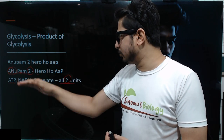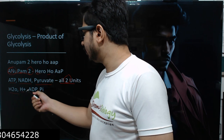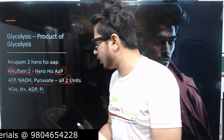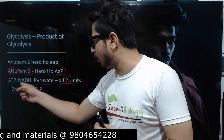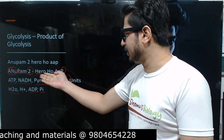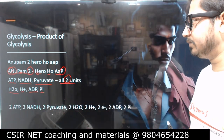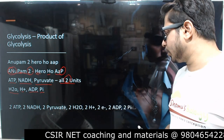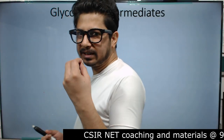Now the second part: 'hero hoa.' 'H' is for H2O, 'H' again is for H+, 'A' is for ADP, and 'P' is for Pi — inorganic phosphate. So the complete products of glycolysis are: 2 ATP, 2 NADH, 2 pyruvate, 2 H2O, 2 protons, 2 electrons, 2 ADP, and 2 Pi — all in 2 units each.